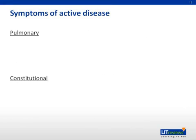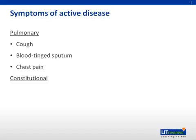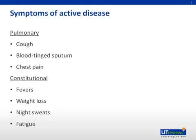Symptoms of active disease are both pulmonary and constitutional. Pulmonary symptoms include cough, often with blood-tinged sputum and chest pain, as well as constitutional symptoms that include fever, weight loss, night sweats, and fatigue. Certainly other diseases cause these, but if you're thinking about tuberculosis, you want to ask about all of these.